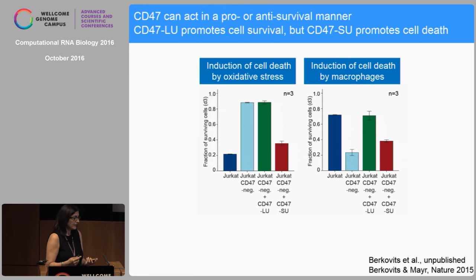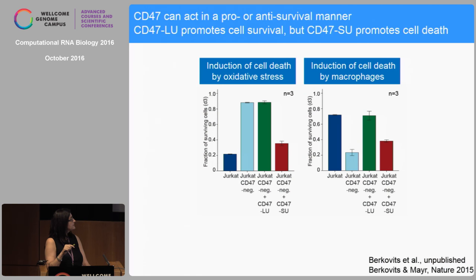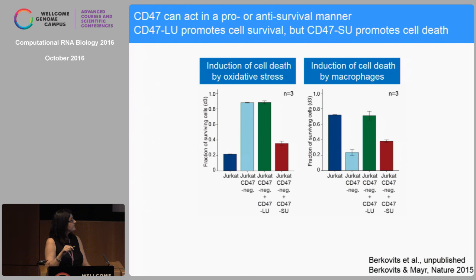Now everybody was confused because CD47 can have both pro-survival and anti-survival functions. If cells exposed to oxidative stress contain CD47, they die; if they don't contain CD47, they survive. However, if they are exposed to macrophages, CD47 has a pro-survival role. But if you take into account the 3' UTR, everything becomes logical again: it's always CD47-LU that has a pro-survival function, and it's always CD47-SU that has a pro-cell-death function.